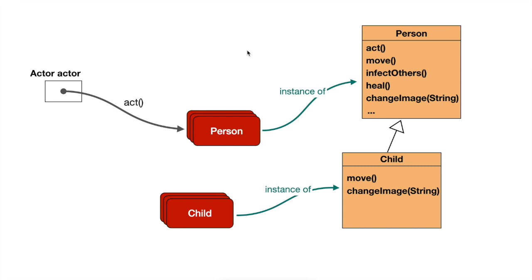So let's understand in detail what happens when this is going on. The Greenfoot framework has one of the objects in its Actor variable. Even though the type is Actor, it is legal to have a Person or a Child stored in it, because Person and Child are both subclasses of Actor. By subclassing rules, a variable can hold objects of its declared type or any subtype. So we call the Act method on the current object, and the Java runtime follows the instance-of pointer, finds the class of the current object, and searches for the Act method there — finding and executing it in the Person class.